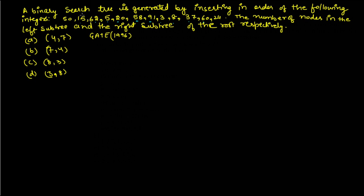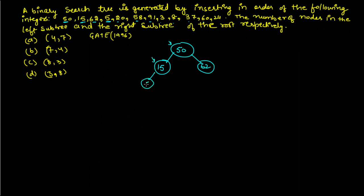Let us create the binary tree. 50 will be the root. 15 is less than 50 so it goes to the left subtree. 62 is greater than 50 so it goes to the right subtree. 5 is less than 50 and less than 15 so it goes to the left. 20 is less than 50 but greater than 15 so it goes to the right. 58 is greater than 50 but less than 62 so it goes to the left.